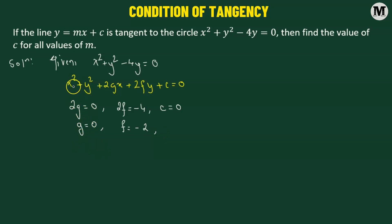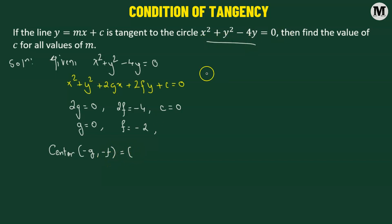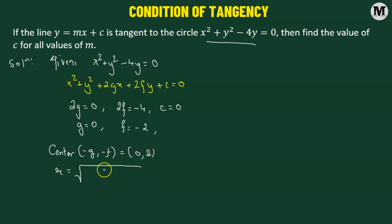We compare with the general form because the center is given by the coordinates (negative g, negative f). For this circle, the center is at (0, 2). The radius is given by the square root of g squared plus f squared minus c. Substituting the values of g, f, and c, we get the radius equals 2 units.